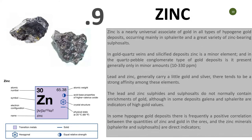Number nine is zinc. Zinc is nearly universal — associated with gold in all types of lode gold deposits, occurring mainly as sphalerite, which is very abundant. Lead and zinc generally occur together. There is a strong affinity between lead and zinc, and they also associate with gold and silver. This is something you need to look out for.